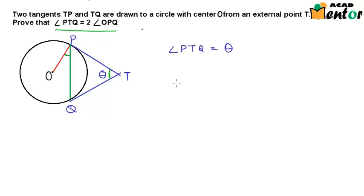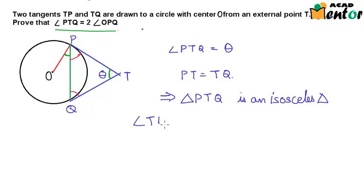Now in the previous video, we saw that PT is equal to TQ because both of these are two tangents drawn to the same circle from an external point T and they are of equal length. So this implies that triangle PTQ is an isosceles triangle. And we know in an isosceles triangle, the angles opposite to the equal sides are equal to each other. That means this particular angle is also equal to this angle. So we can write in triangle PTQ, angle TPQ is equal to angle TQP.